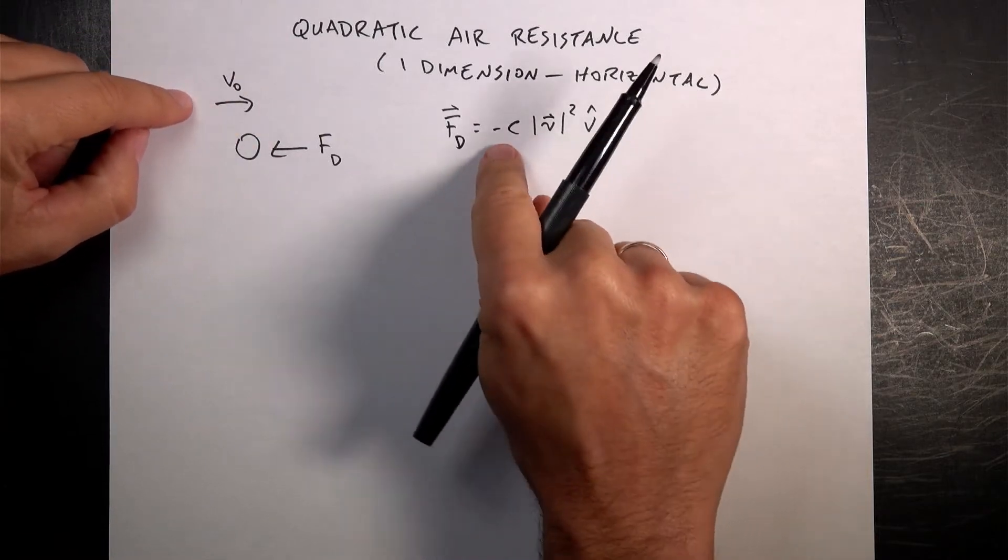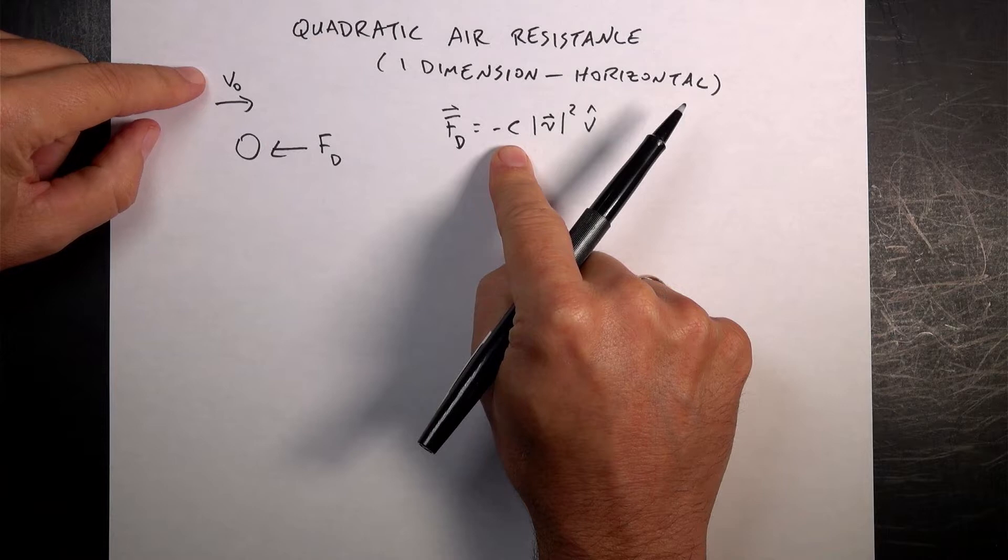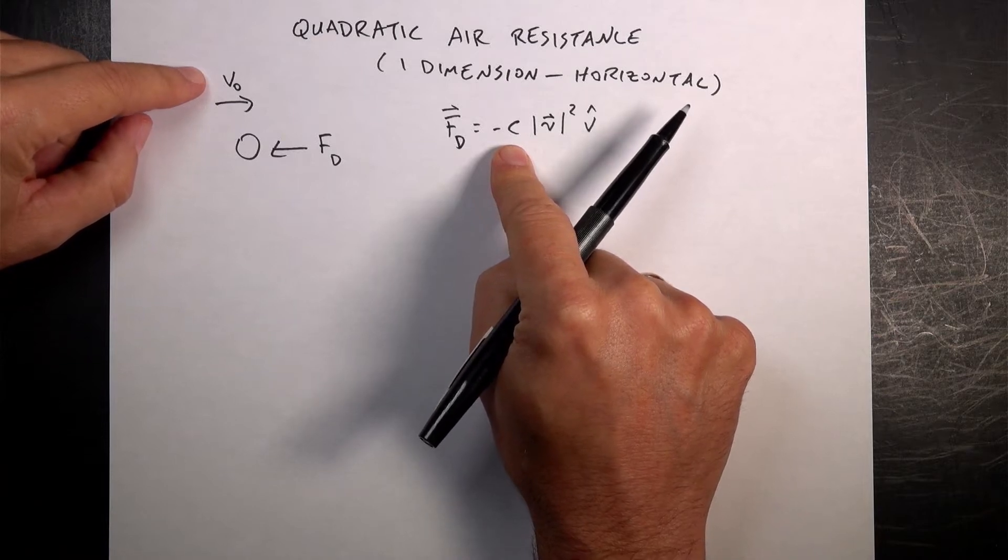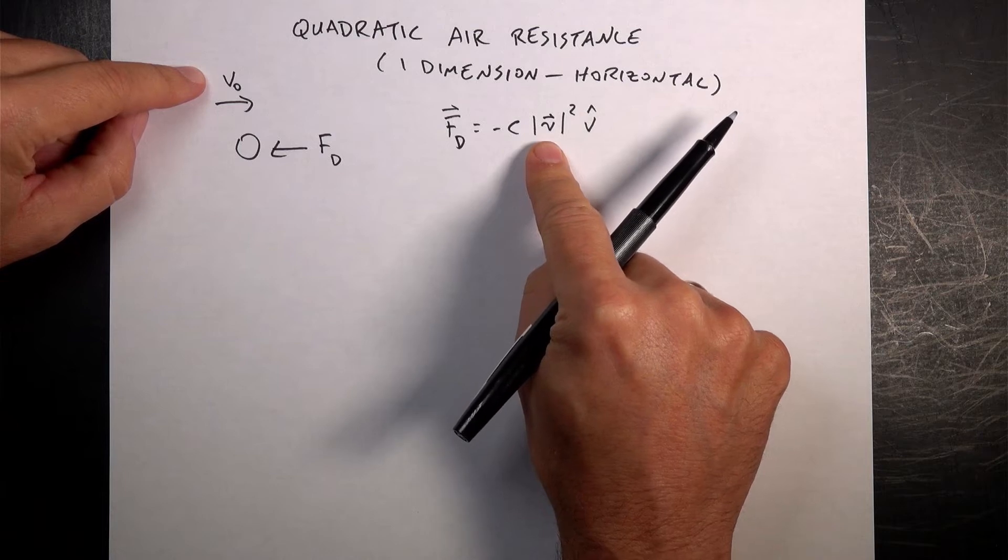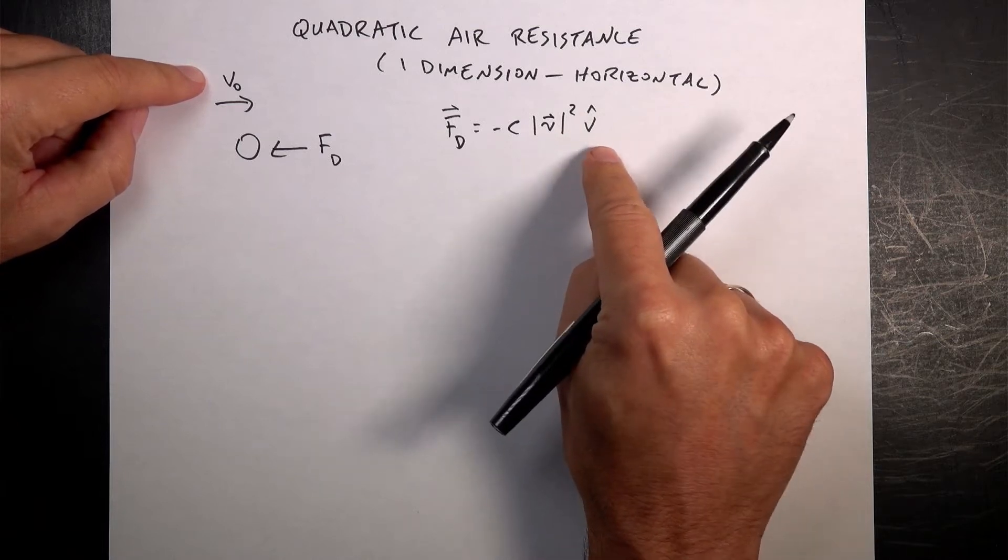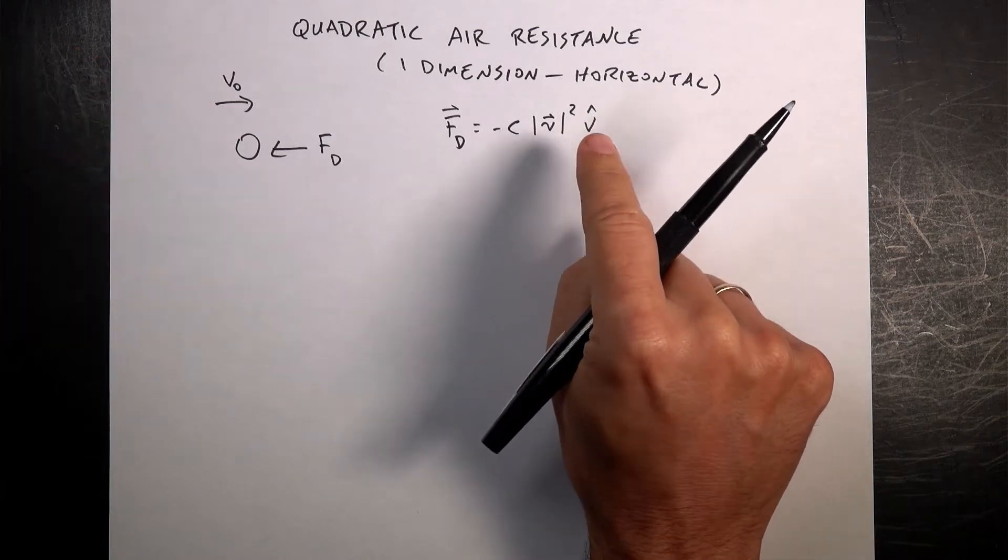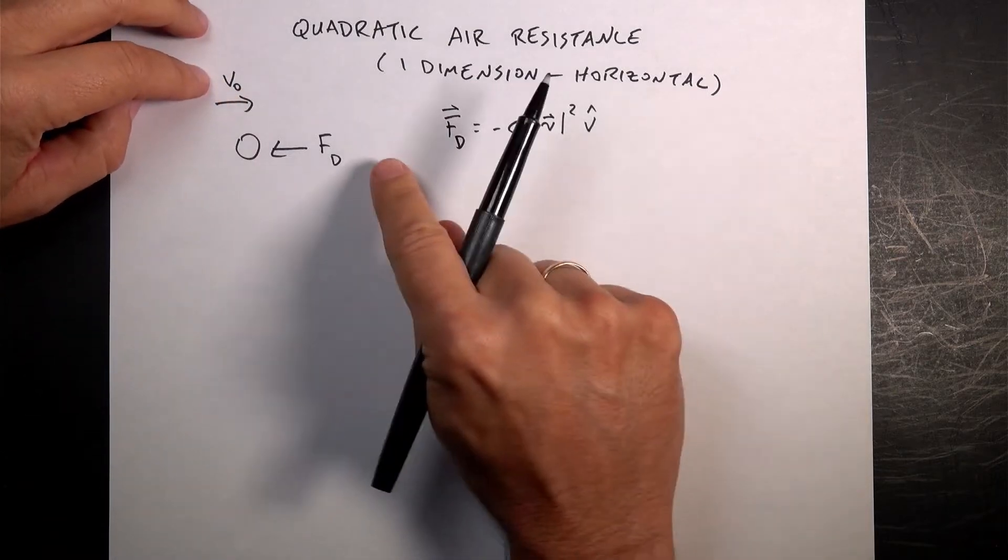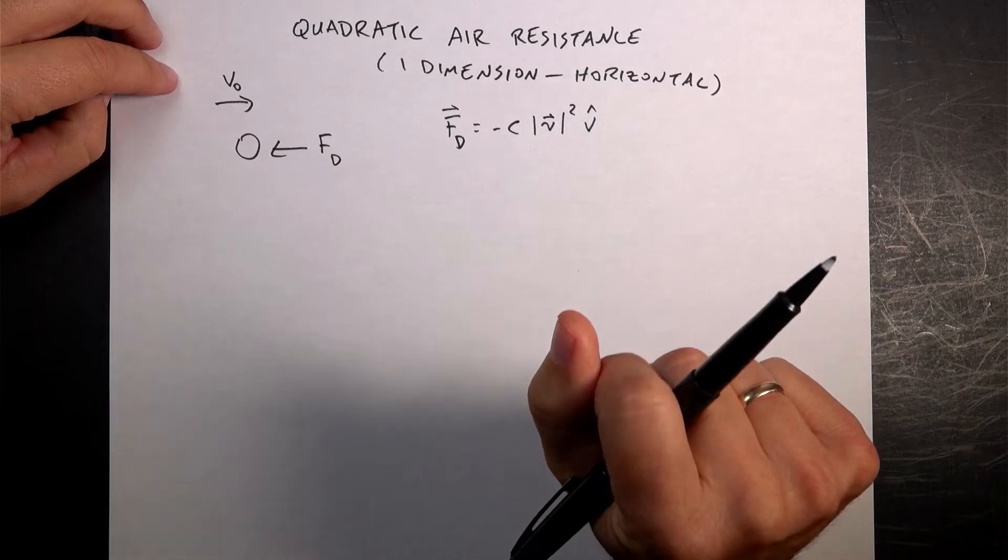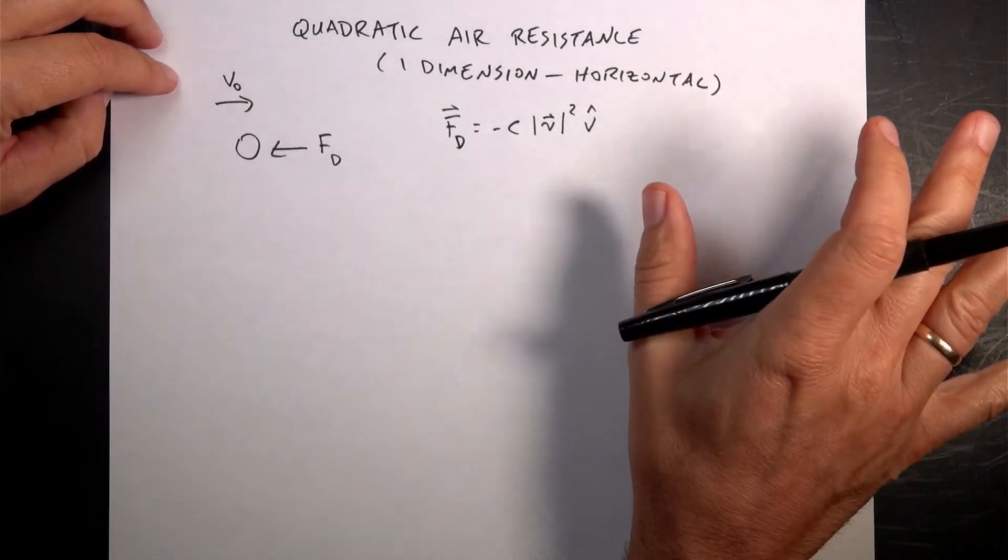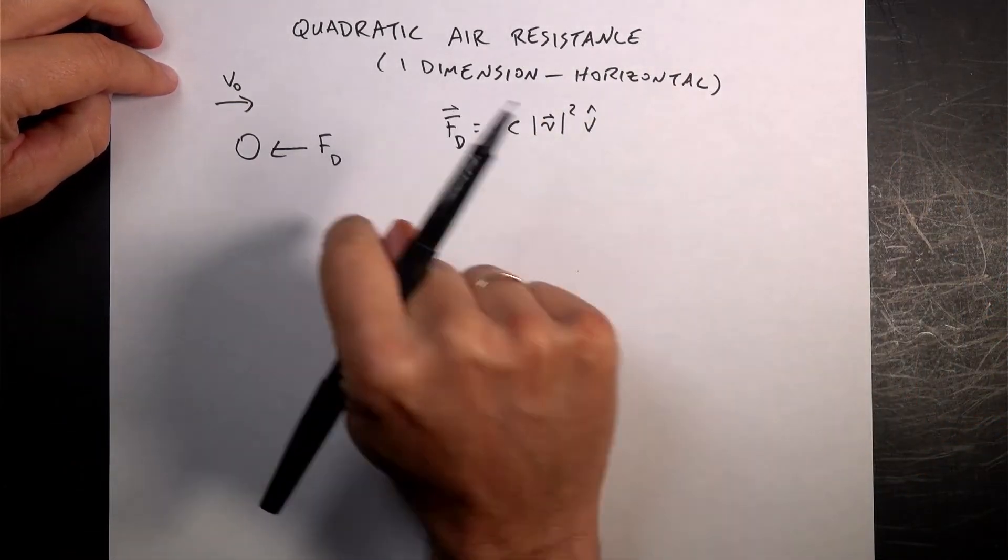As a vector, you would write that as some drag coefficient that depends on the material and the shape and the size of the object. We're just going to call it c. The magnitude of the velocity—you can't square vectors, you've got to take the magnitude—and then you'd have to multiply by a unit vector v hat in order to get it back as a vector. Of course, we're going to do this a simple way because we're going to do it in one dimension, and it's horizontal.